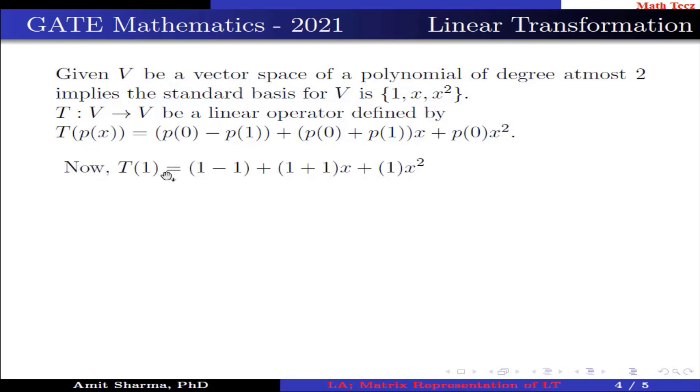Now T(1) = (1 - 1) + (1 + 1)x + (1)x². Here p(0) = 1 and p(1) = 1. This can be further written as 0 + 2x + 1x².